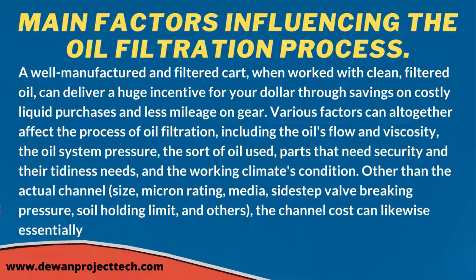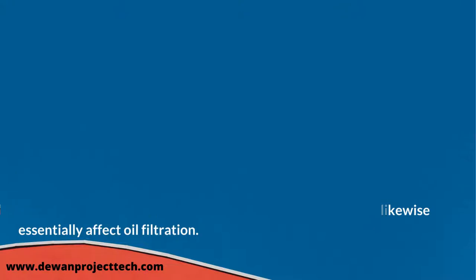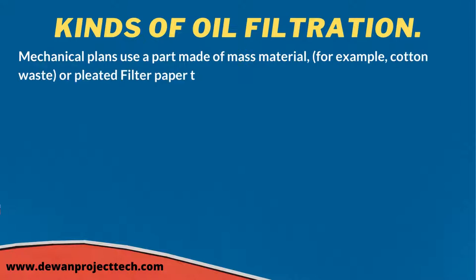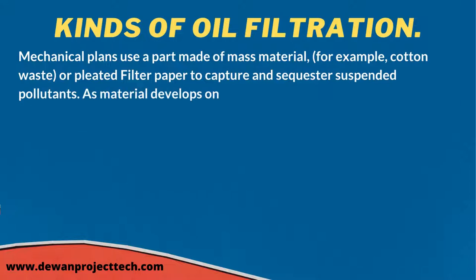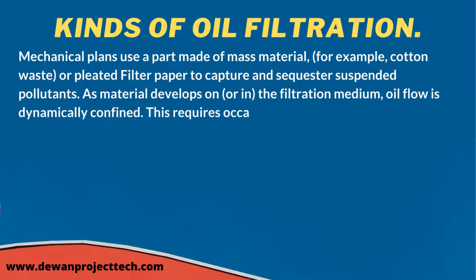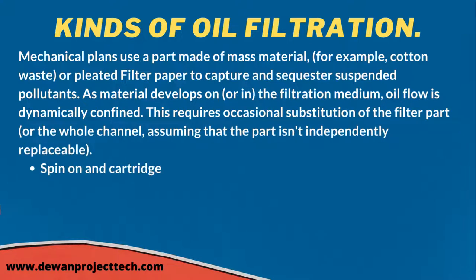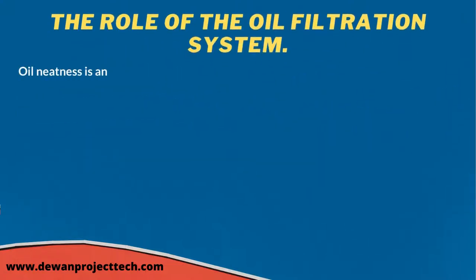Types of oil filtration: Mechanical designs use a part made of bulk material, such as cotton waste or pleated filter paper, to capture and sequester suspended pollutants. As material builds up on or in the filtration medium, oil flow is progressively restricted. This requires occasional replacement of the filter part or the whole unit, especially if the part isn't independently replaceable. Other types include spin-on, cartridge, magnetic, sedimentation, and centrifugal filters.